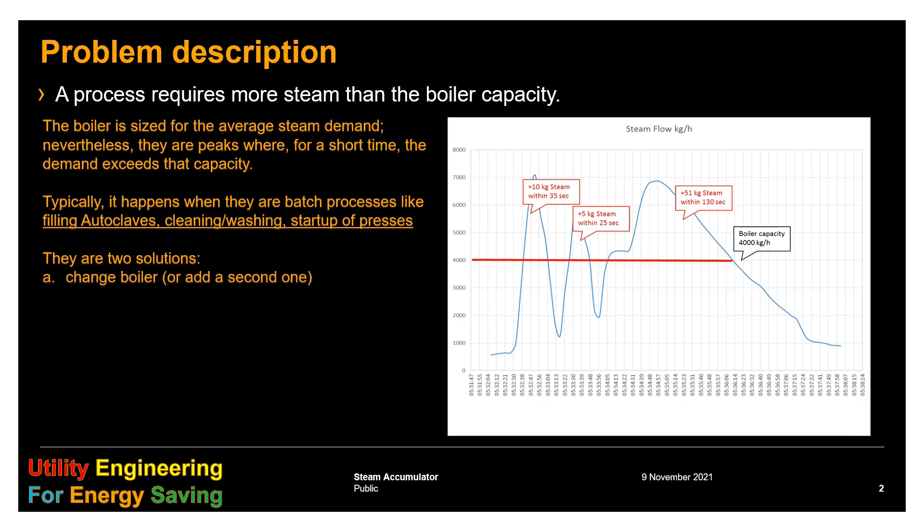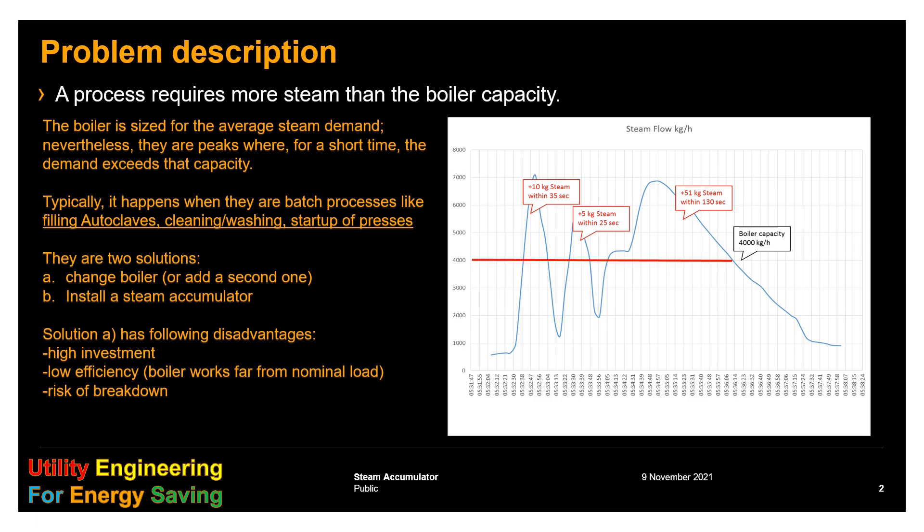There are two solutions: either change the boiler or install a steam accumulator. Solution A has the following disadvantages: high investment, low efficiency because the boiler works far from nominal load, risk of breakdown from continuous start and stop of the burner, and wet steam from frequent charge and discharge cycles and pressure drop.